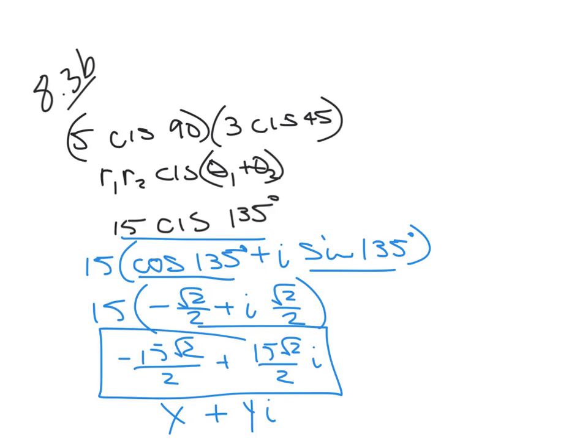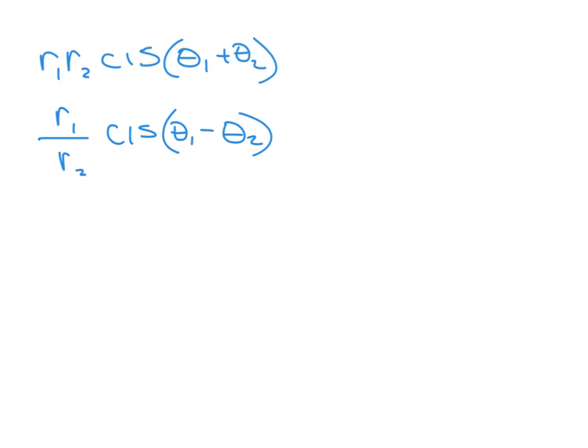That's how you do the product. Now let's look at the next section, which is quotients of complex numbers in trig form. We're going to use what's called the quotient theorem. The product theorem multiplies absolute values and adds arguments. The quotient theorem divides the absolute values and subtracts their arguments.